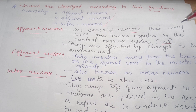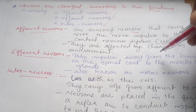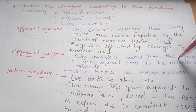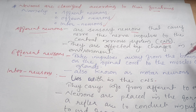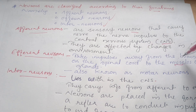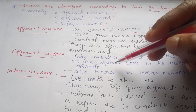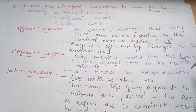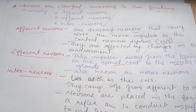Efferent neurons take impulses away from the brain or the spinal cord to the muscles. These are also known as motor neurons, transmitting signals from the central nervous system to the muscles.